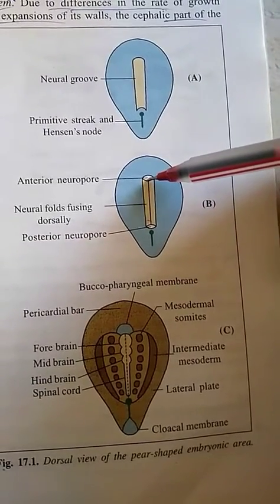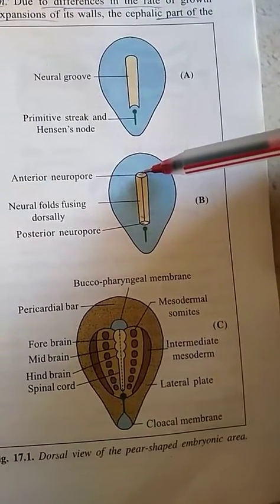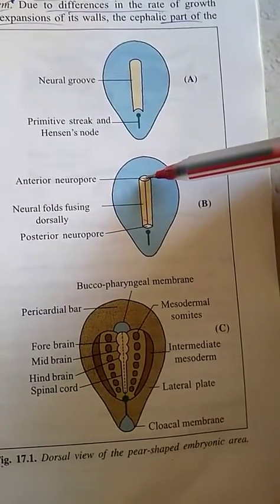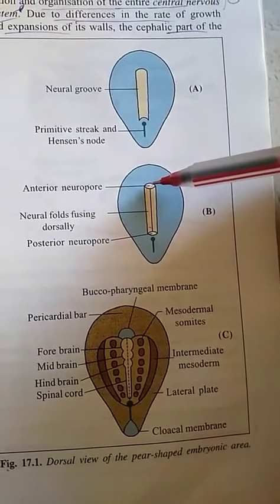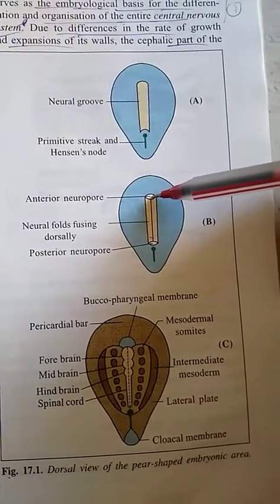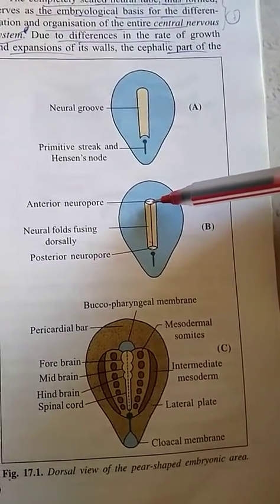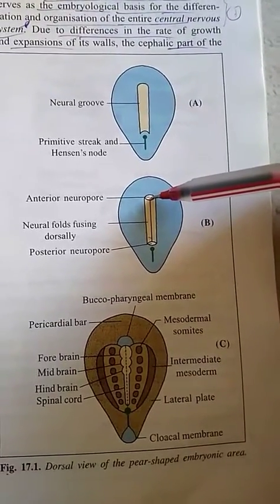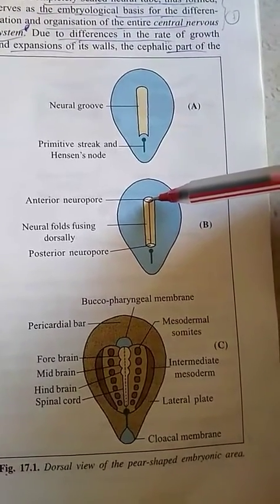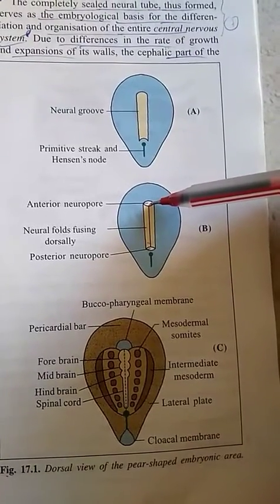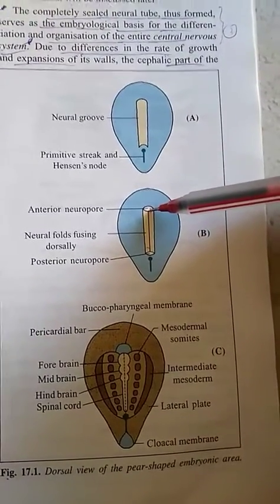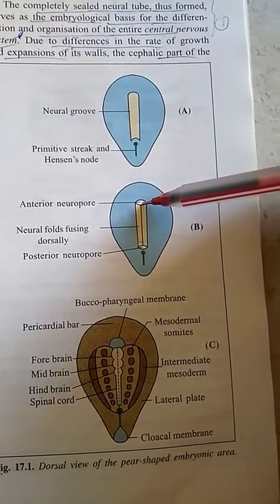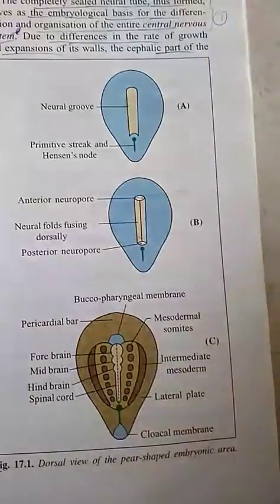If the anterior neuropore fails to close, it leads to a congenital anomaly known as anencephaly. In this condition, the nervous tissue is exposed to the surface as a degenerated mass and consequently the cranial vault is absent. The appearance of the fetus is typical with prominent eyes and chin touching the chest due to absence of a neck. Due to this, the swallowing reflex does not develop, so the anencephalic fetus is usually associated with hydramnios.